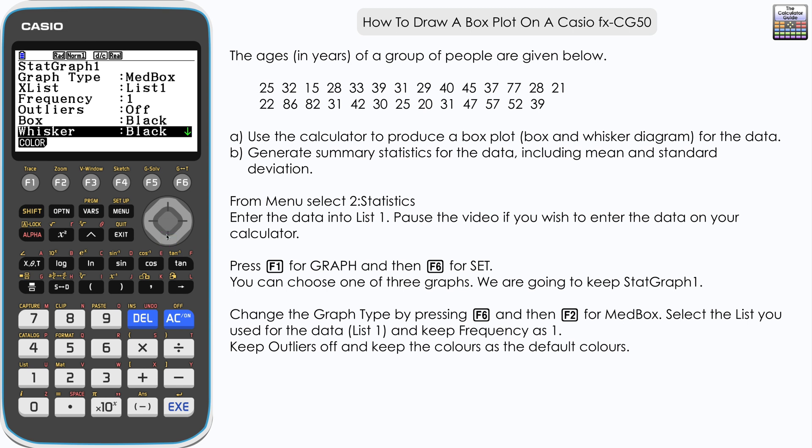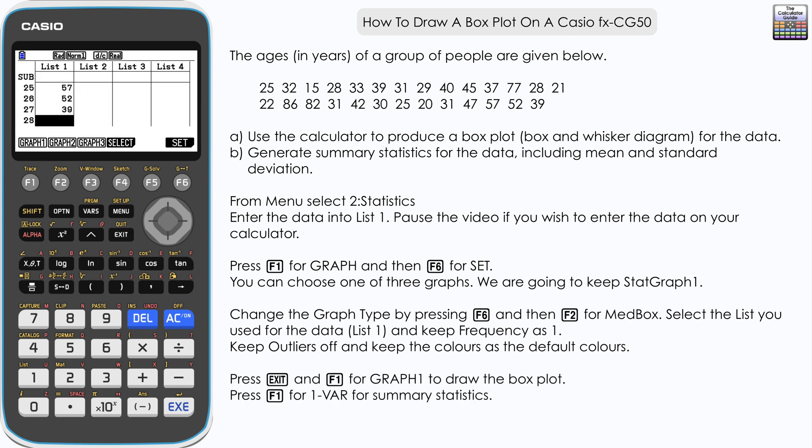So we'll have the outline of the box and the whiskers in black. Outliers, well we don't have any, but they would be in red, and then the filling color of the box is going to be blue. So we'll leave those as default there. Let's exit, and then we're ready to draw the graph. It's F1 for Graph 1, and here you can see our box plot.